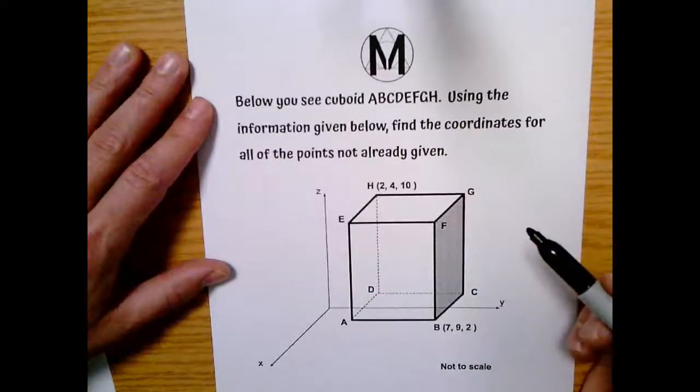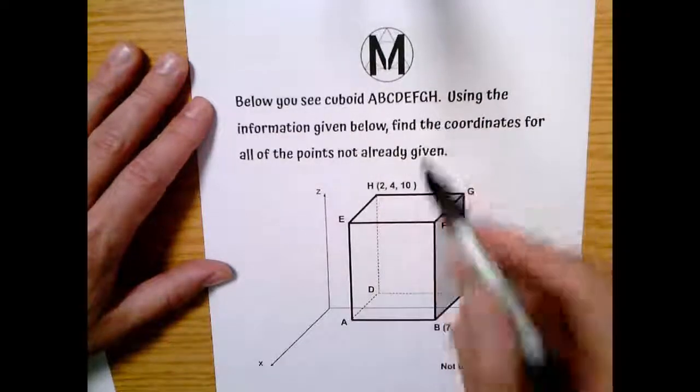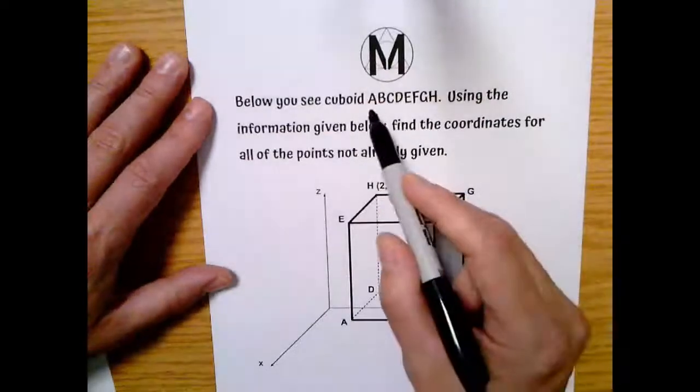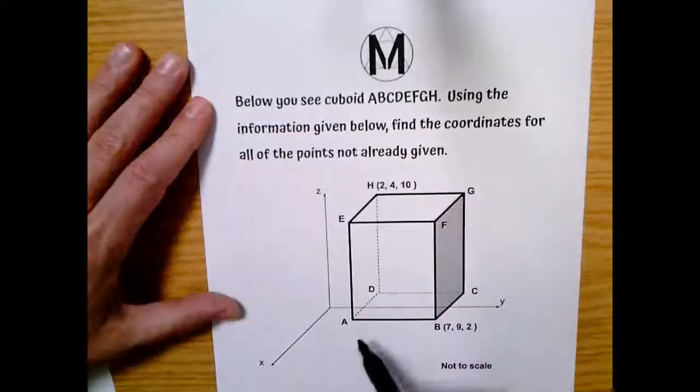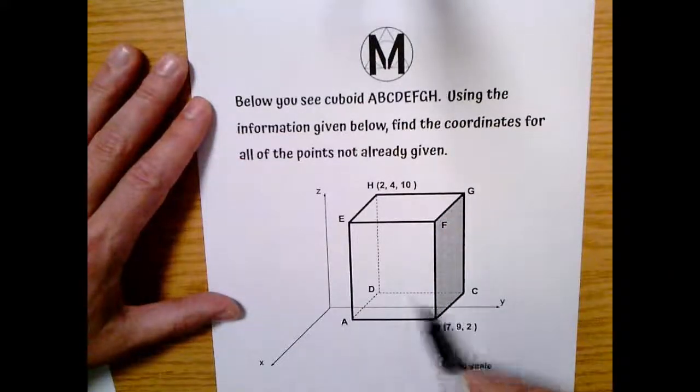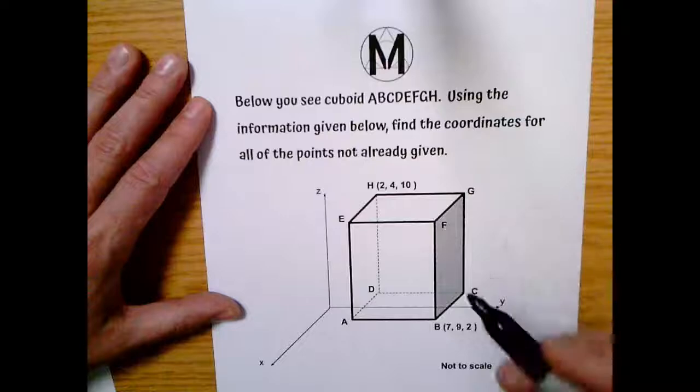So essentially, we're just looking for the coordinates for all of these points. And let's recognize here that these points, the name of this cuboid, that's just the points on the vertices, right? A, B, C, D, E, F, G, H.